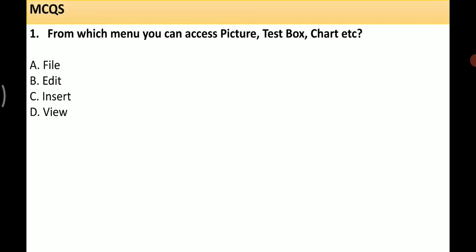Question 1: From which menu can you access Picture, Text Box, Chart, etc.? The options are: A) File, B) Edit, C) Insert, D) View. The correct answer is C) Insert.